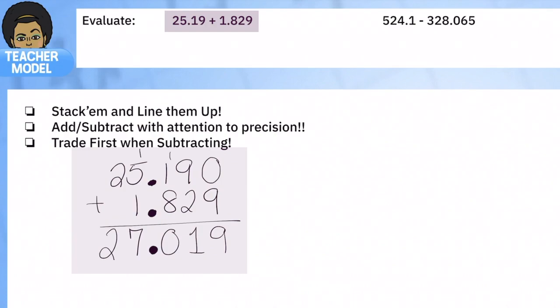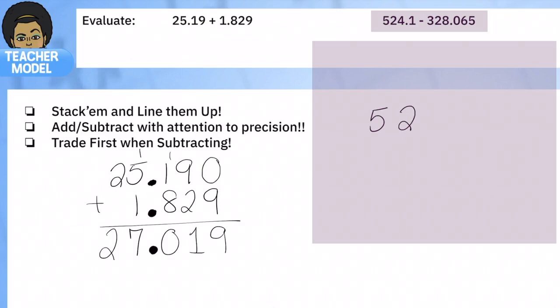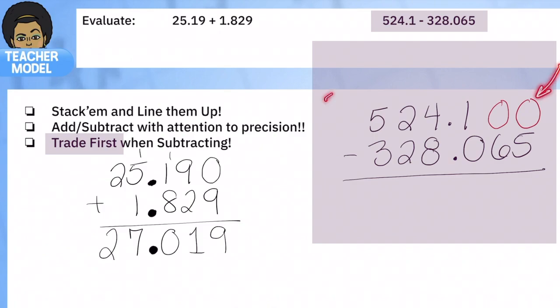Now for our subtraction problem, we're going to start the same way. I want you to watch how I think through this problem because we're going to use something called trade first. We also put in these zeros as placeholders, and I'm going to start here on the left instead of subtracting on the right.